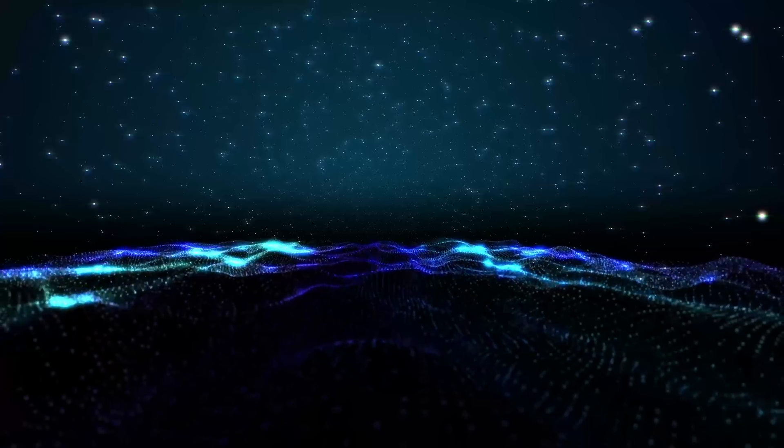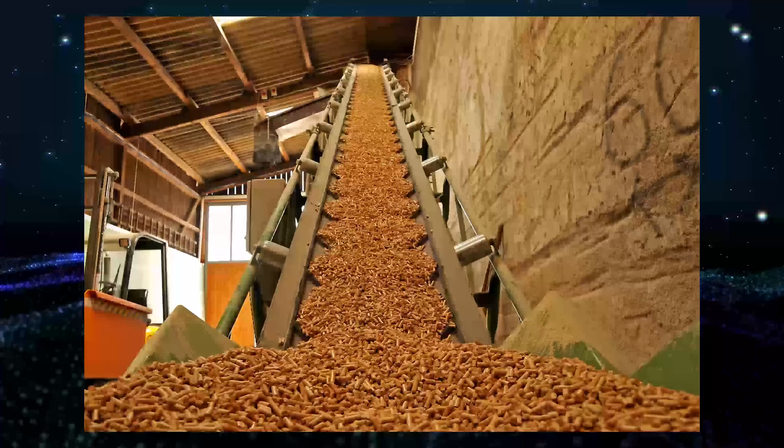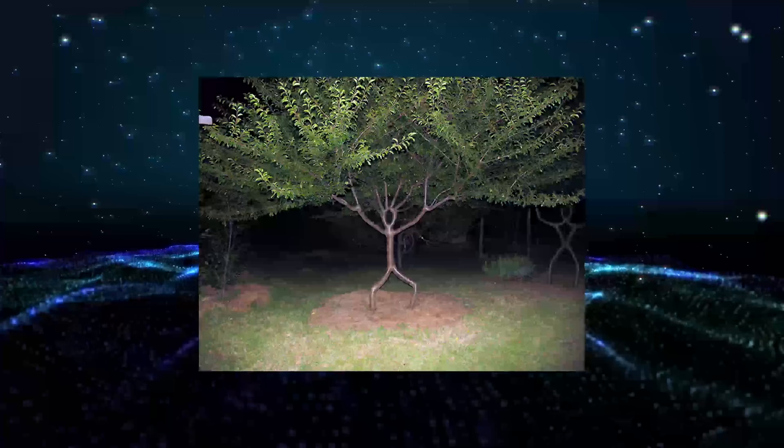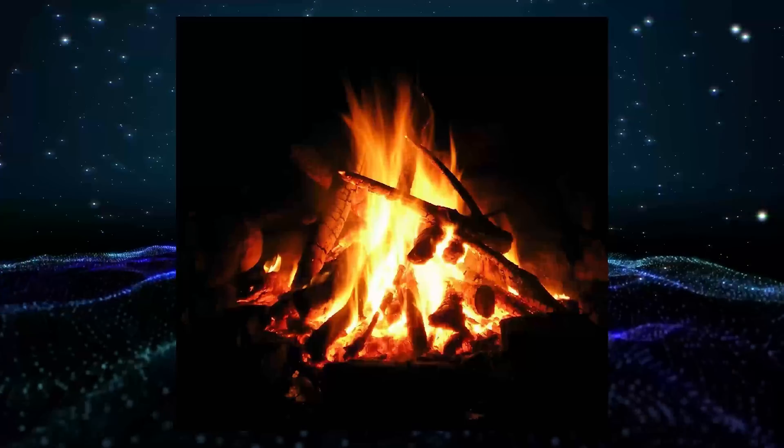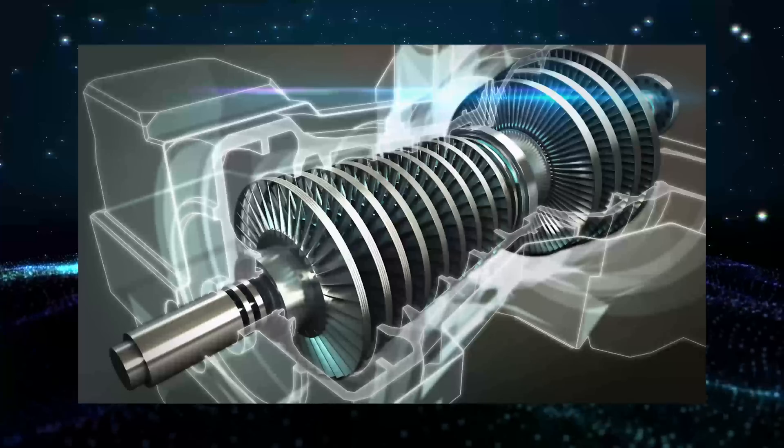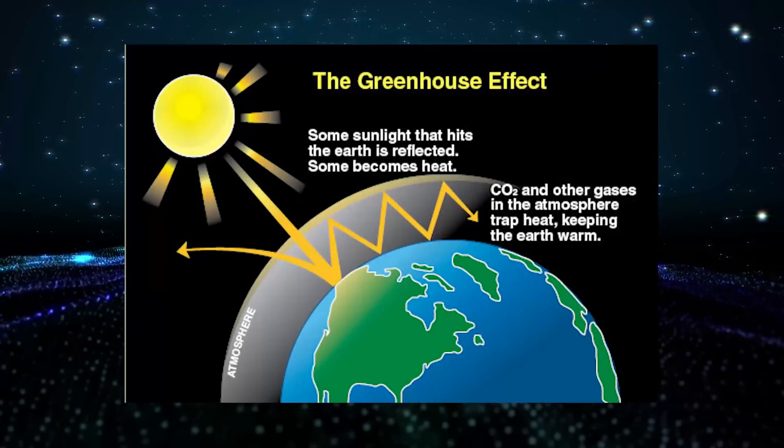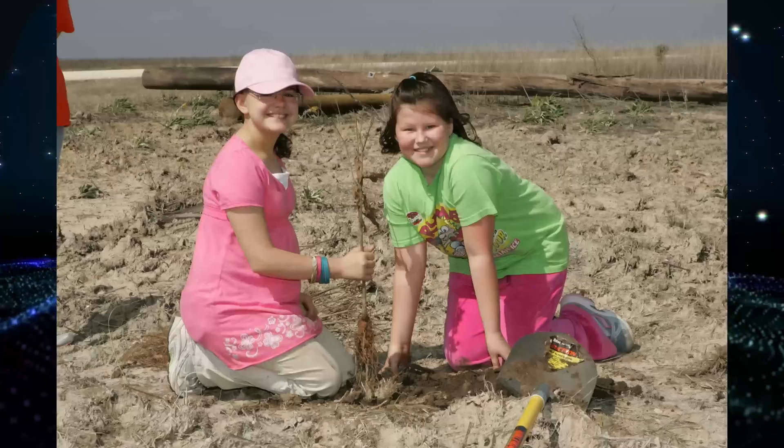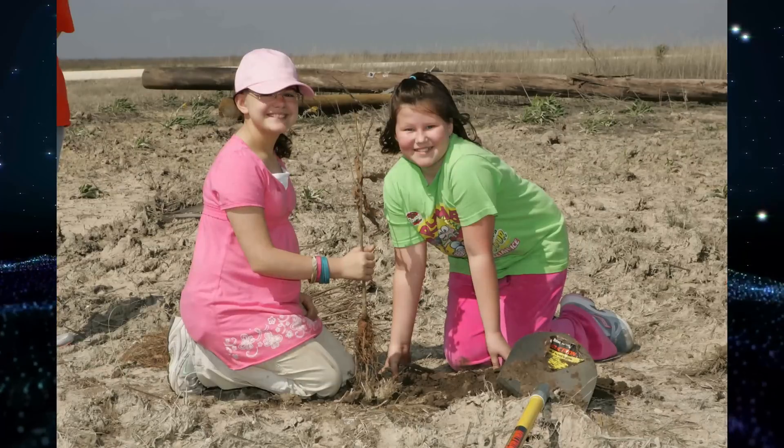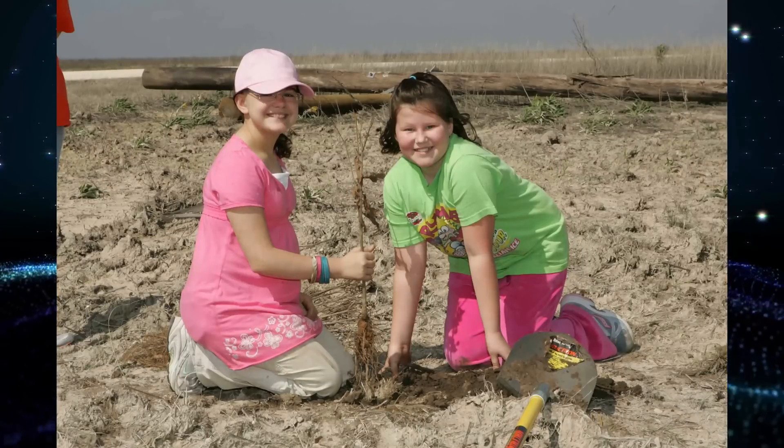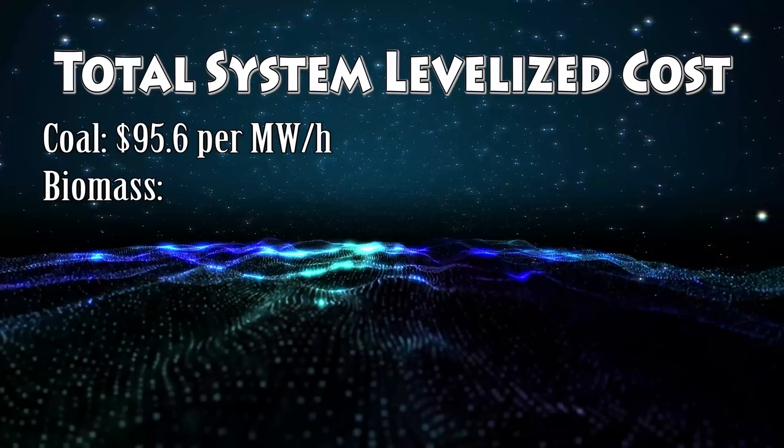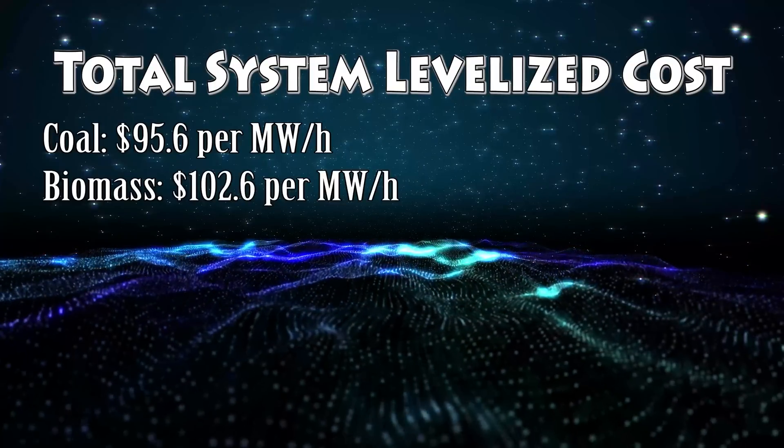The first alternative energy source on my list is biomass. Biomass reactors work by burning trees and plants to generate heat and spin a steam-powered turbine. Burning trees releases carbon dioxide into the atmosphere, but if you replant those trees when you're done burning them, they will someday suck in the carbon dioxide that was released. Biomass has a levelized cost per MWh of $102.6.